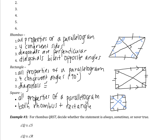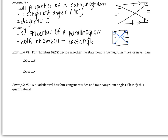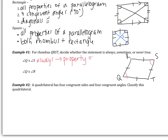We're going to apply these properties now. Example number one: for rhombus QRST, decide whether the statement is always, sometimes, or never true. I'm going to draw a rhombus with four congruent sides and label the vertices QRST in order. The first statement is: angle Q is congruent to angle S. Opposite angles are congruent — that's a property of parallelograms, and a rhombus is a parallelogram. So this is always true because it's a property of parallelograms.